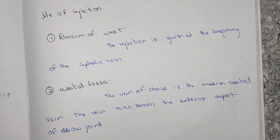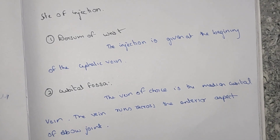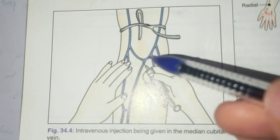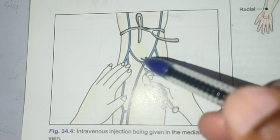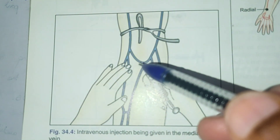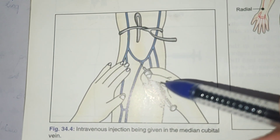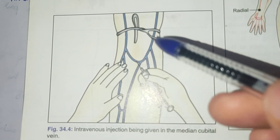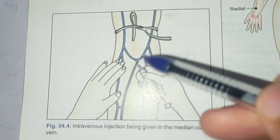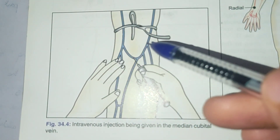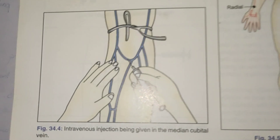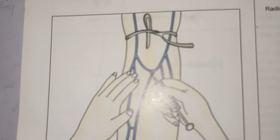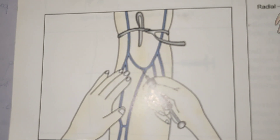This is the median cubital vein running in the anterior part of the cubital fossa. A tourniquet thread is applied to make this vein visible and the injection is given. If you like this video, please like, share, and subscribe to the YouTube channel.